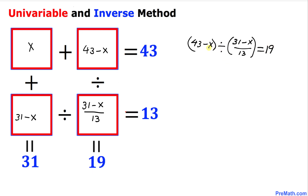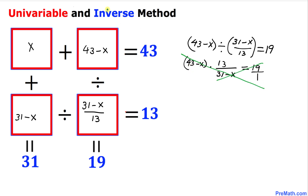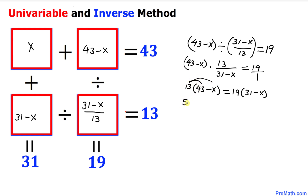Let's simplify this equation. We rewrite it as (43 minus x) times 13 divided by (31 minus x) equals 19. Putting 1 under 19 to make it a fraction and cross-multiplying gives: 13 times (43 minus x) equals 19 times (31 minus x). Distributing: 559 minus 13x equals 589 minus 19x.